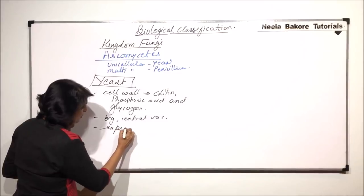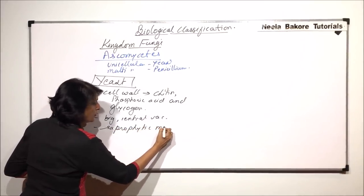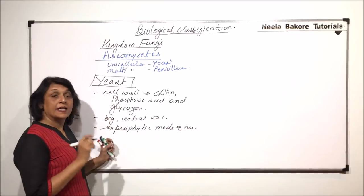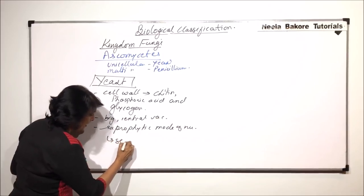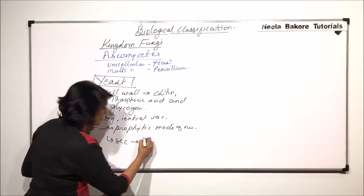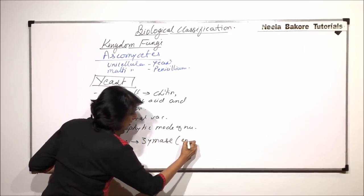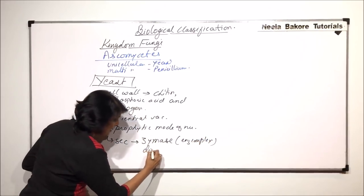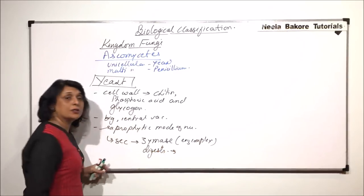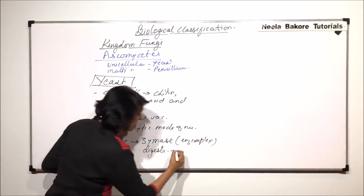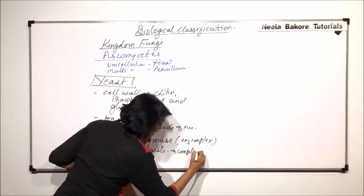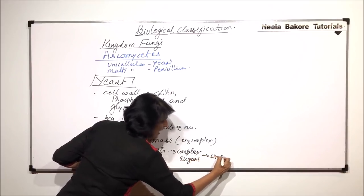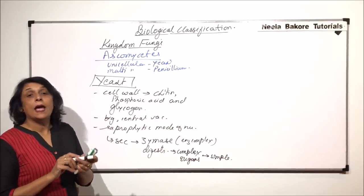So, the saprophytic mode of nutrition is seen in case of all these fungi including yeast. But here, yeast, they secrete an enzyme complex which is known as zymase. It is an enzyme complex. And this enzyme complex digests complex sugars into simpler sugars. Complex sugars or carbohydrates into simple ones. And these simple ones are then absorbed.